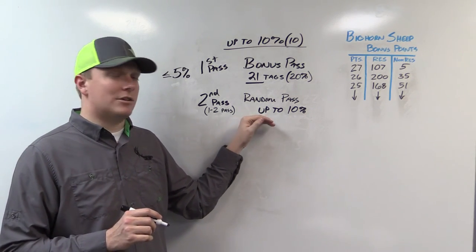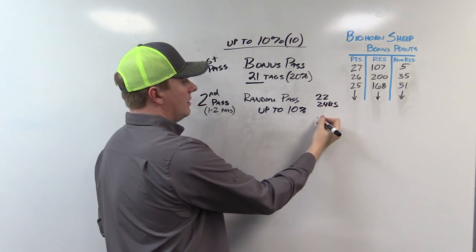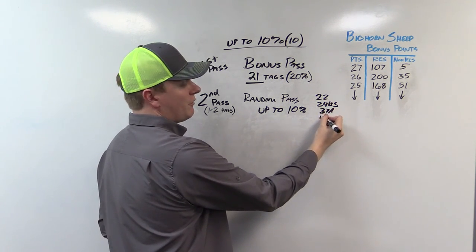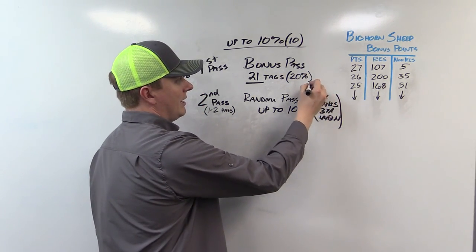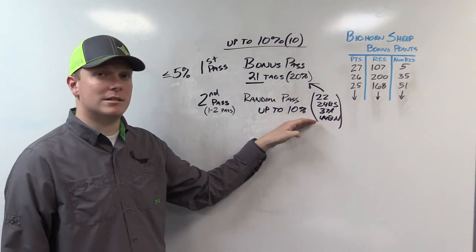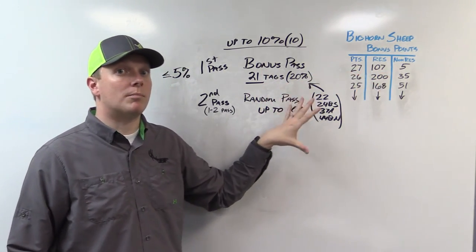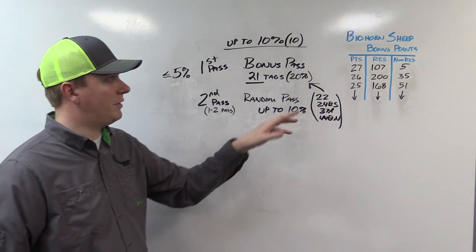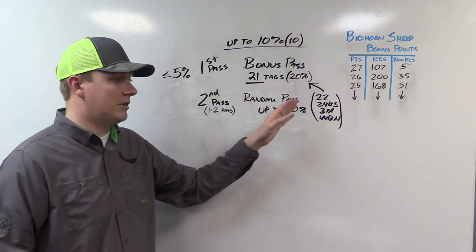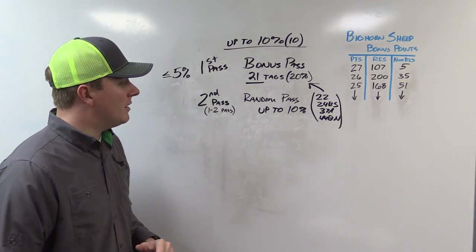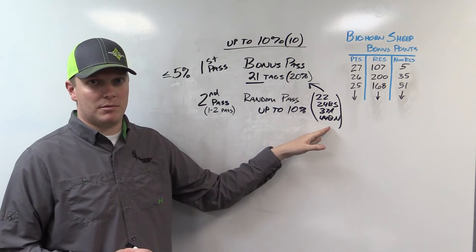So we see non-residents in this random pass that are applying for units like 22, 24B South, 37A, even 44B North. A lot of times those units are all taken and all allocated in this bonus pass. So if those are your choices, you don't have a shot. Now there is a chance that these top guys won't apply for those units, but highly unlikely. If you've been waiting 25 years for a tag, you're going to put in for the best units and just wait until you either die or get a tag. It's pretty much how it goes.